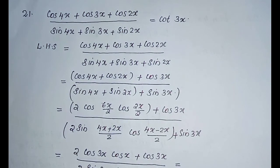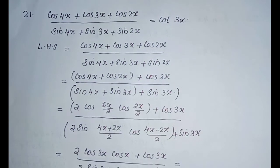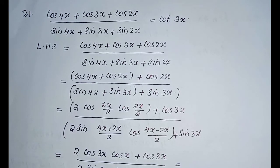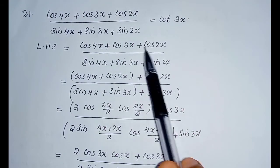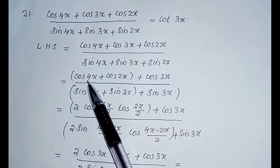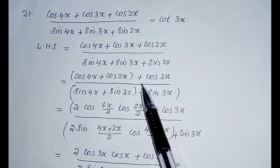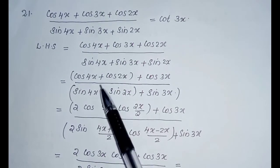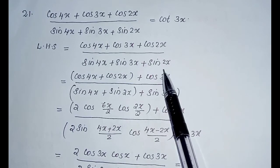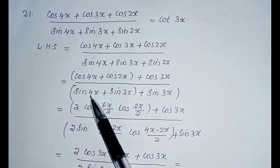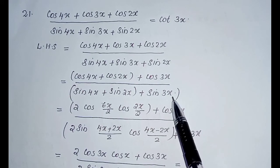Question number 21: cos 4x plus cos 3x plus cos 2x divided by sin 4x plus sin 3x plus sin 2x. LHS equals cos 4x plus cos 3x plus cos 2x divided by sin 4x plus sin 3x plus sin 2x. We group cos 4x and cos 2x in a bracket: (cos 4x plus cos 2x) plus cos 3x. And also sin 4x and sin 2x in a bracket: (sin 4x plus sin 2x) plus sin 3x.